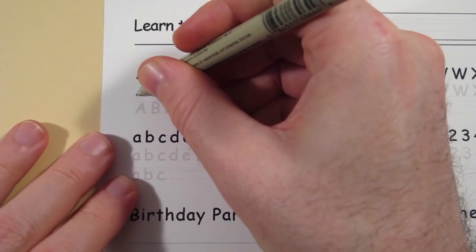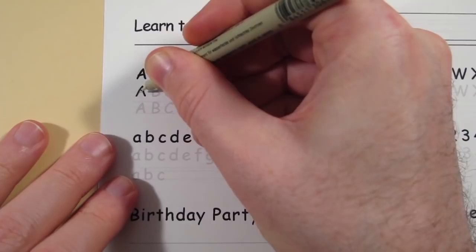Follow the link in the video description to download a practice sheet and follow along. We'll start by tracing the letters to help break away from your previous handwriting influence.